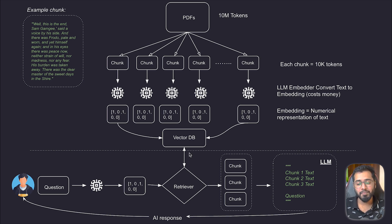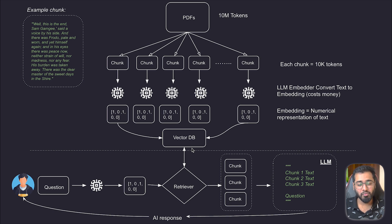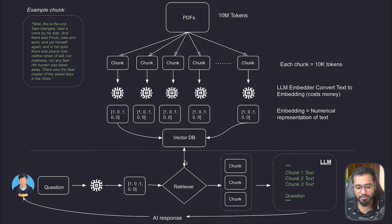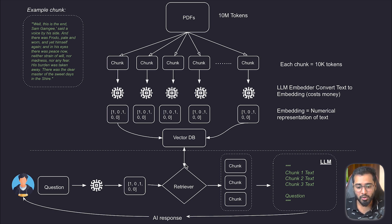Vector stores basically have very low latency, meaning they are very fast because they are working with numbers. So this vector store, with its extremely low latency and high speed, gives back the top five chunks with the highest relevance scores. At this point we have two things: the user's question in English, as well as the passages from the book in the form of smaller chunks that are relevant to the user's question.